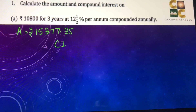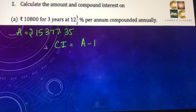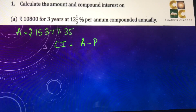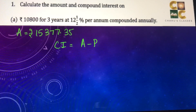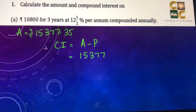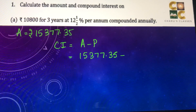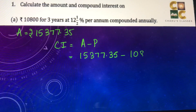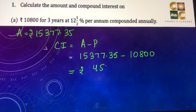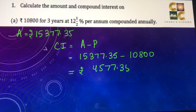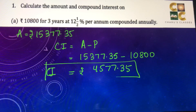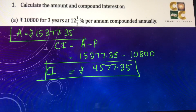Now, our compound interest — interest is always amount minus principal. From the total amount, if we subtract the principal, we get the interest. So 15,377.35 minus the principal 10,800 gives us rupees 4,577.35. So this is our compound interest, and this is our amount.